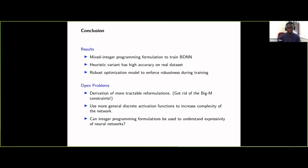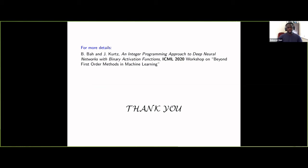In conclusion, we presented a mixed integer programming formulation for training binary deep neural networks. The heuristic variant achieves high accuracy on real data, and we showed how robustness can be enforced using robust optimization. Open problems include derivation of more tractable formulations, removing the Big-M method in favor of other approaches, using more general discrete activations to increase network complexity, and investigating whether integer programming formulations can help understand the expressivity of neural networks.